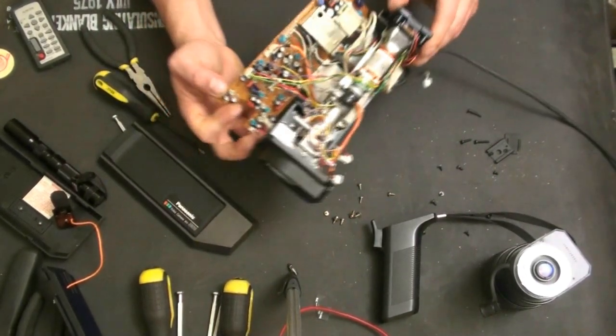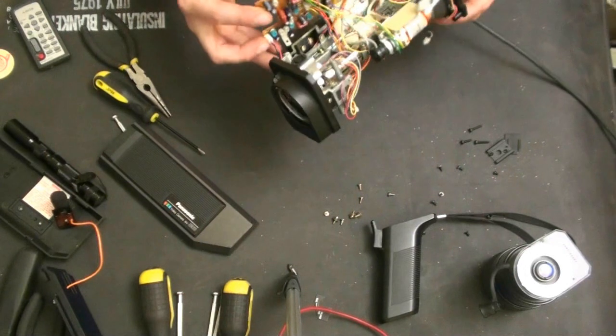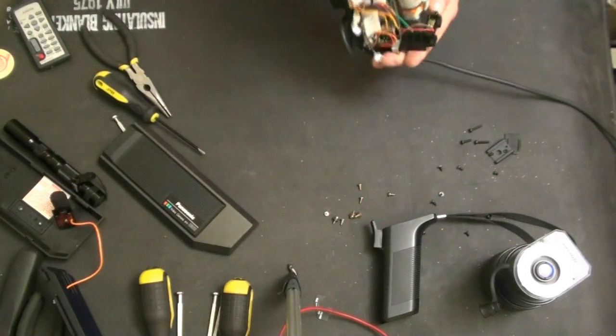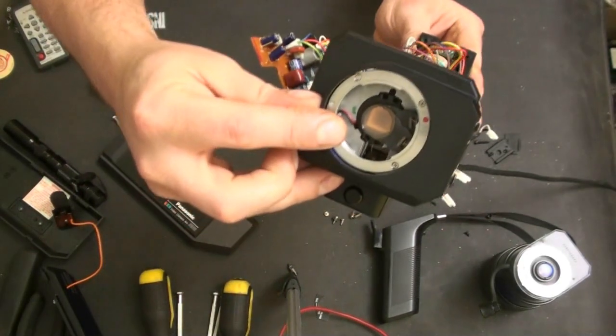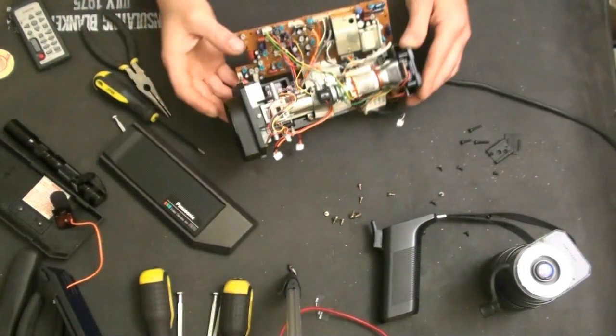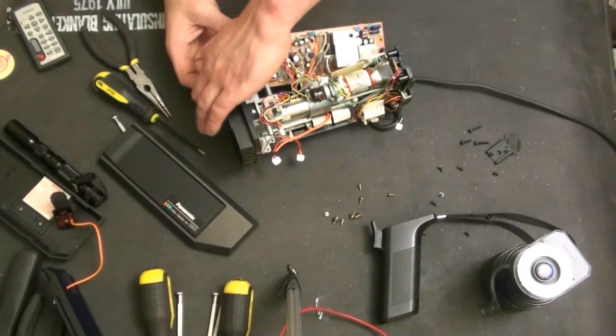there's some wires going up to the front. I'm not sure where those go to, they run into the front, red and black wire that run into the front near the SATICON tube.